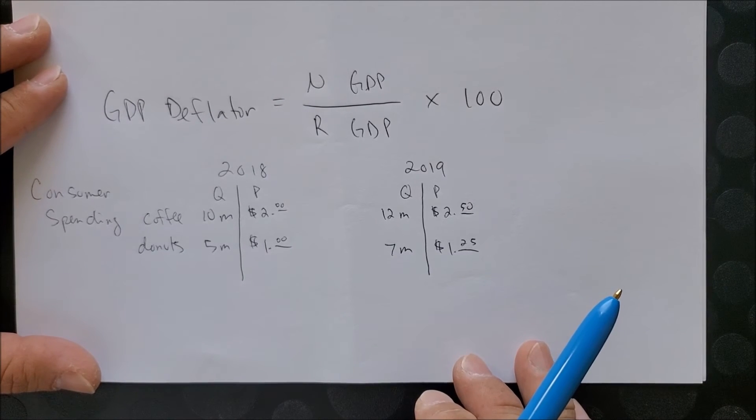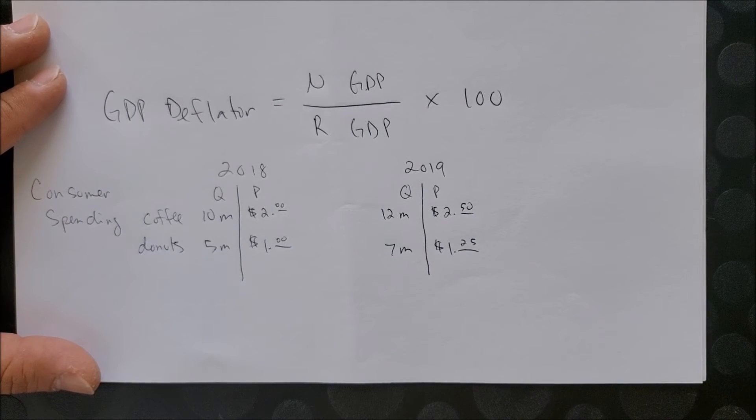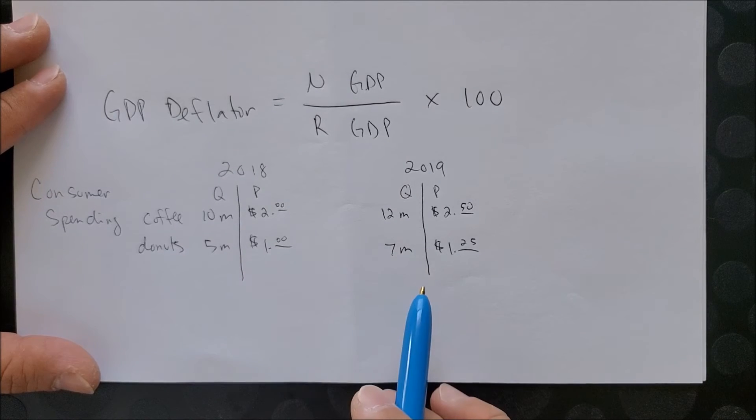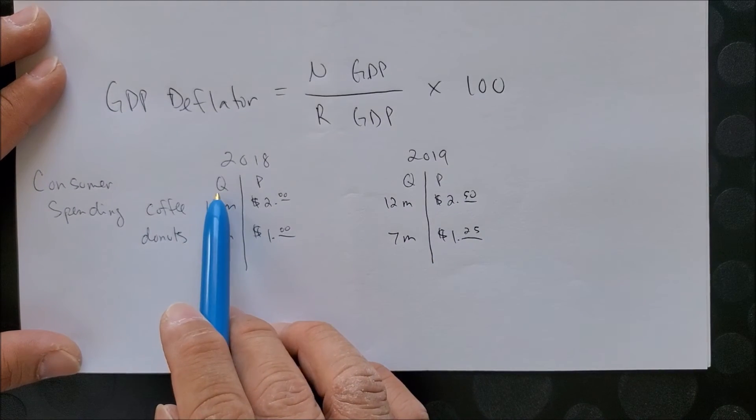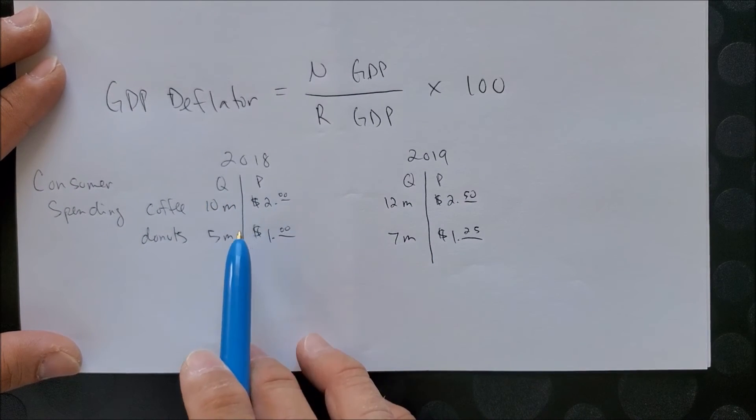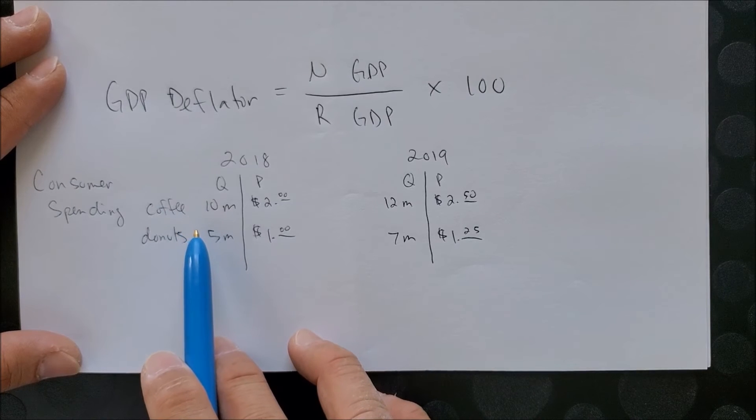Now we want to figure out what is the nominal GDP for both 2018 and 2019. To find that, we are going to multiply quantity times price and add both goods that we have for 2018, then do the same thing for 2019.